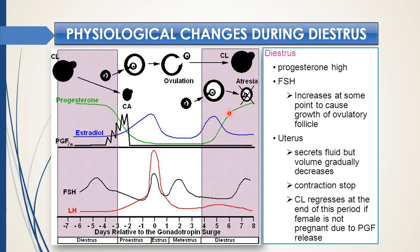The most important hormone in this phase is progesterone — termed the pregnancy-maintaining hormone. If pregnancy is established during this phase after ovulation, then pregnancy will be maintained for some time by progesterone. This phase is the longest in the entire estrus cycle.